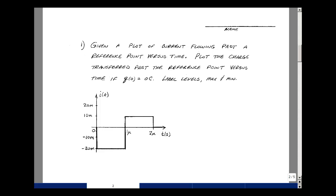The first problem: given the plot of current shown here, flowing past the reference point versus time, plot the charge transferred past this reference point versus time if the initial condition of charge is zero. Label levels, and maximums, and minimums.